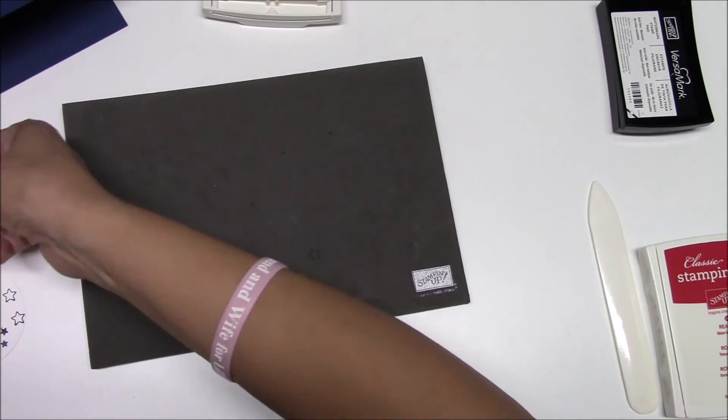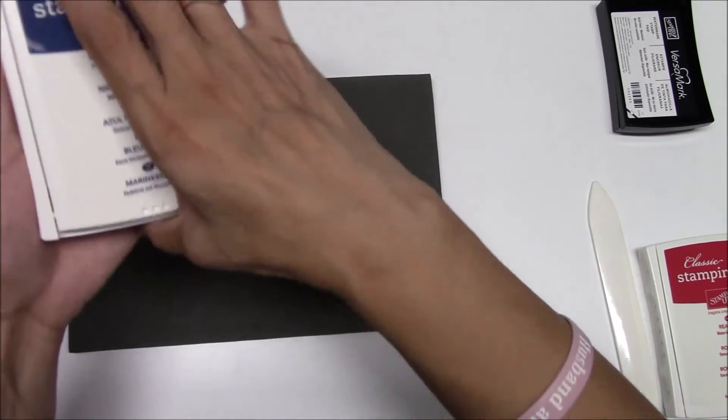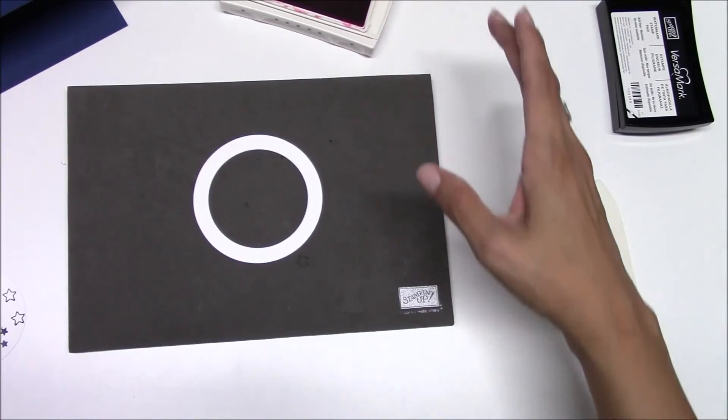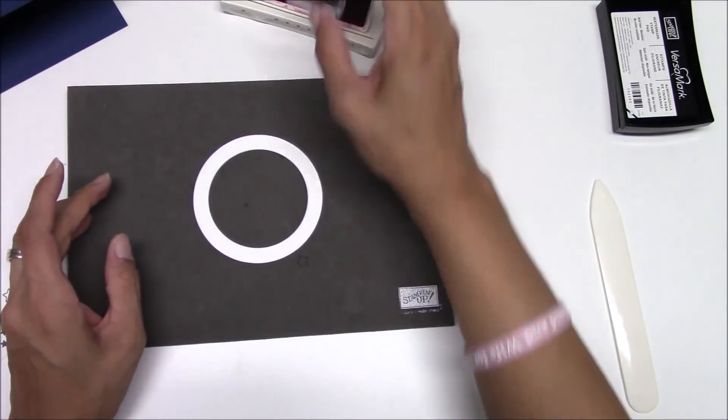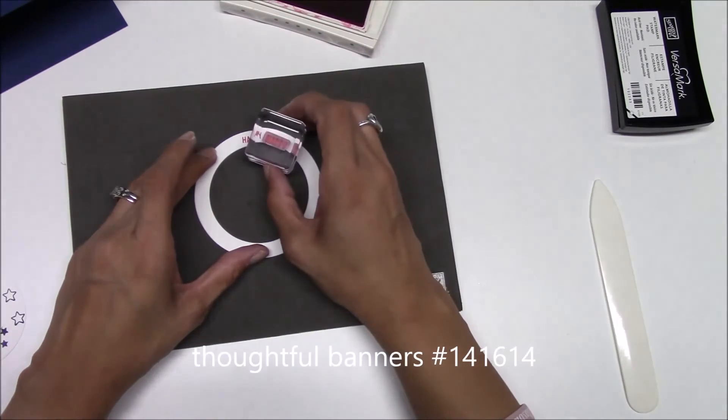Then we're going to bring in the outside circle and the Real Red, and we are going to just place Happy all around it.